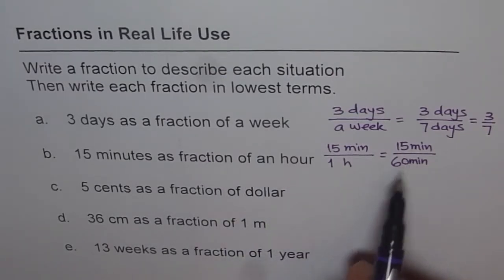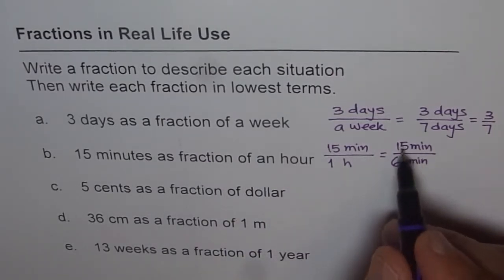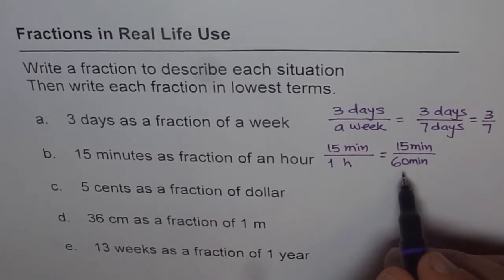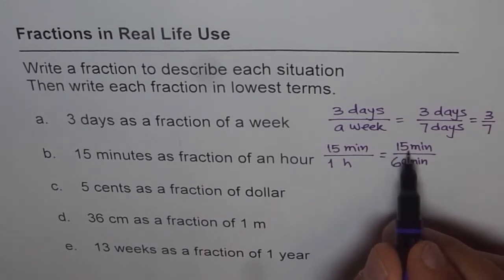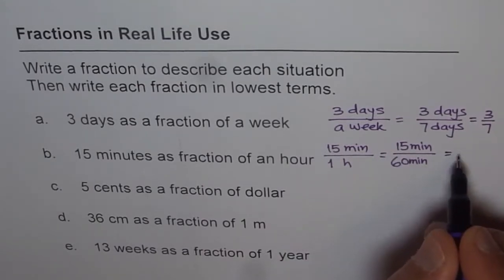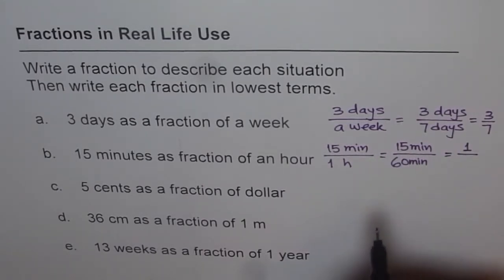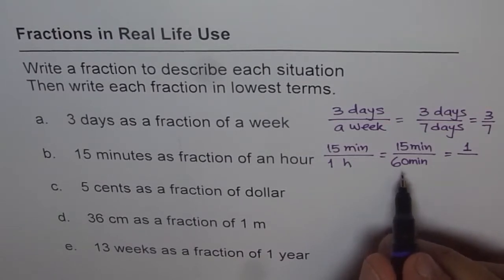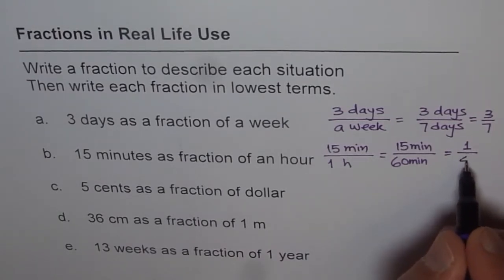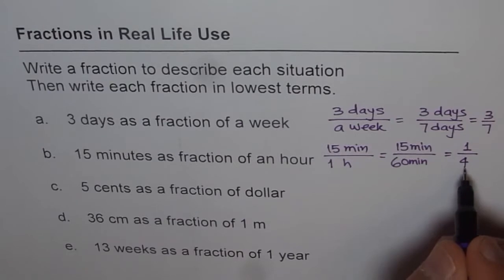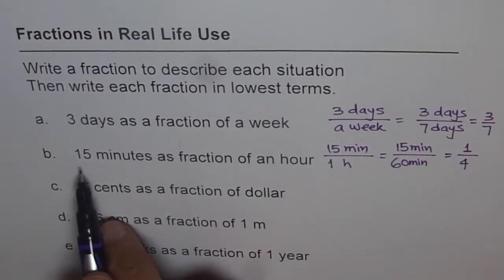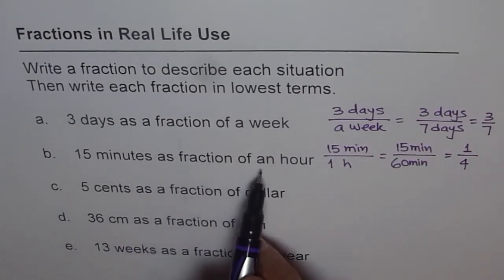Now we can always simplify it, right? You can divide both by 15, correct? Use your calculator and then divide. If you divide 15 by 15, you get 1. So you get 1 on the top, and 60 divided by 15 will be 4. So we can write 4. So 1 over 4 is 15 minutes as a fraction of an hour, correct?